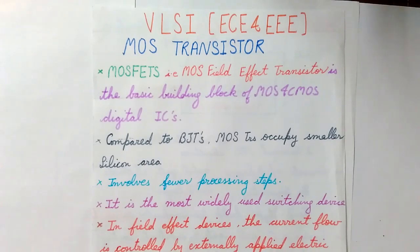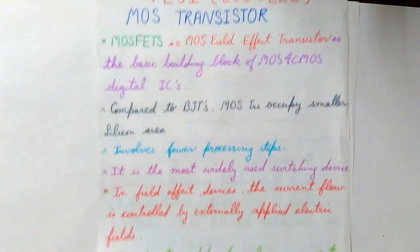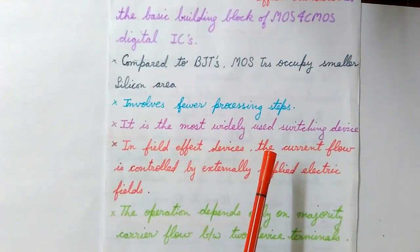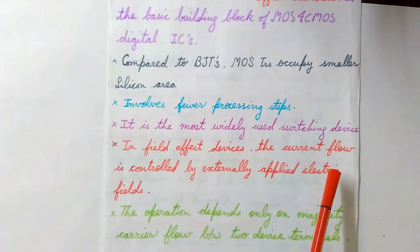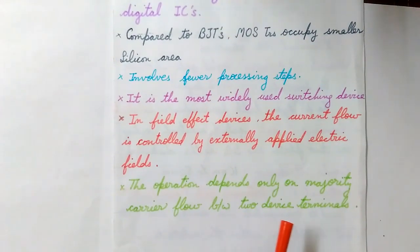Now when compared to BJTs, these MOS transistors occupy very small silicon area, involve fewer processing steps, and are the most widely used switching devices. In field effect devices, the current flow is controlled by the externally applied electric fields, or we can say the gate voltage controls the current inside the device.